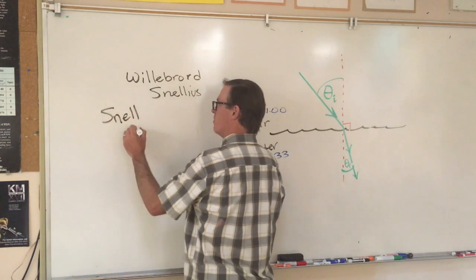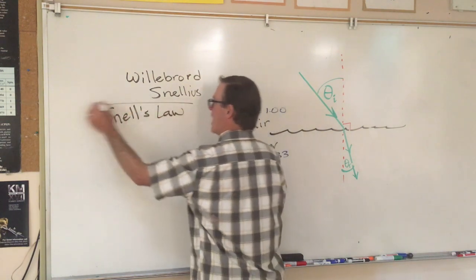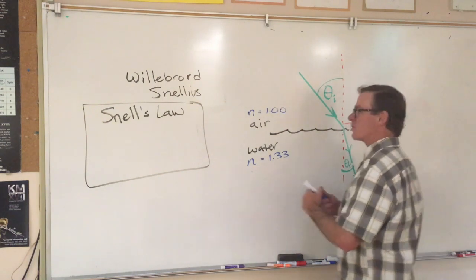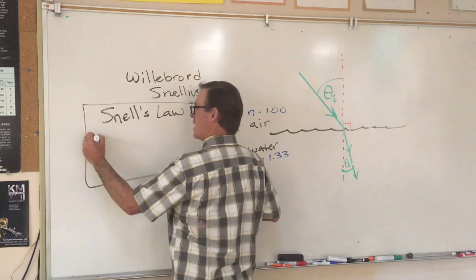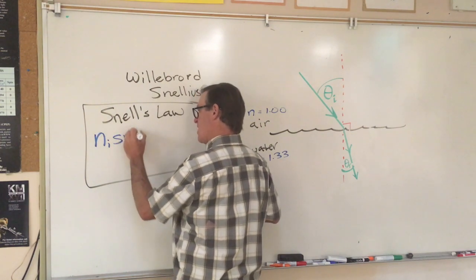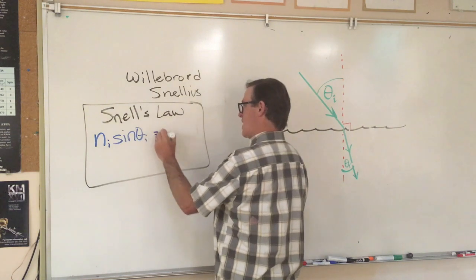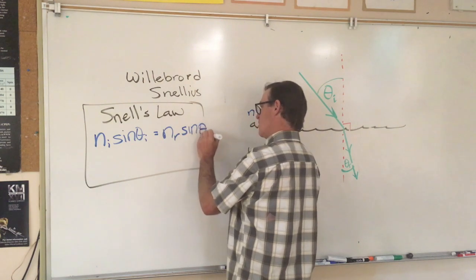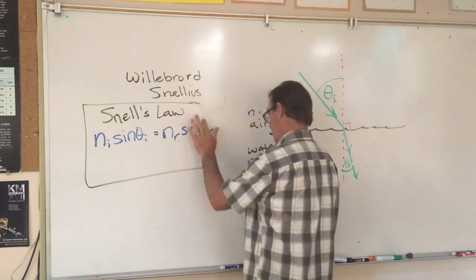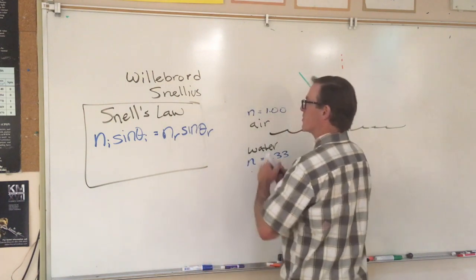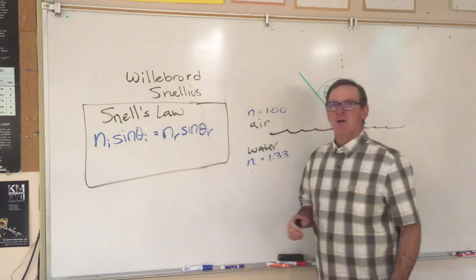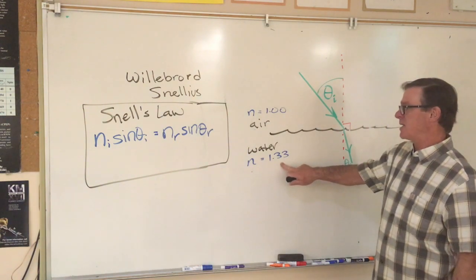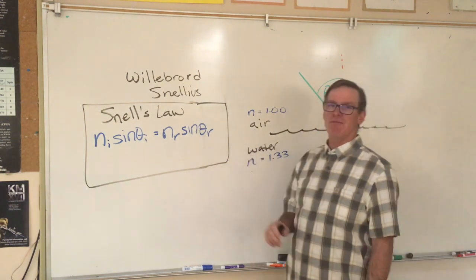Snell's Law states that n i sine theta i equals n r sine theta r. So that if you know the two indices of refraction and you know one of the angles, you can solve for the other.